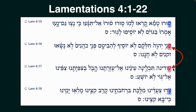Chapter 4 is again a single acrostic — 22 verses starting with Aleph, Beth, Gimel, Dalet, and so on. But here, where you'd expect Samek, Ayn, Peh, Tzade, instead he has Samek, Peh, Ayn — the letters are interchanged in chapter 4 as well, and then the remaining order continues.